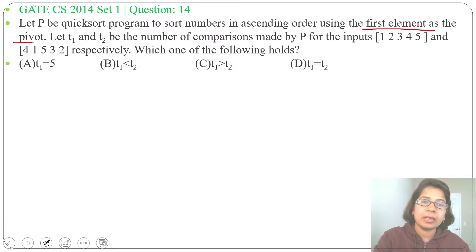Let t1 and t2 be the number of comparisons made by pivot for the inputs [1 2 3 4 5] and [4 1 5 3 2] respectively. Which one of the following holds? Four options are given.